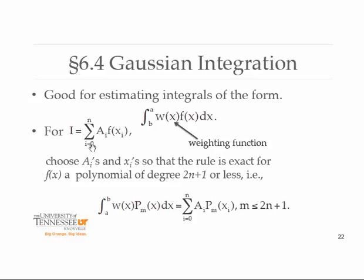For our typical integration rule of this form, we choose the weights a sub i and the abscissas x sub i in a certain way. With Gaussian integration, it's done in a way so that the actual quadrature rule would be exact — no approximation — exactly correct, if the function was a polynomial of degree 2n plus 1 or less.